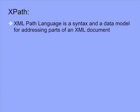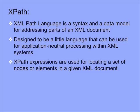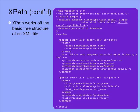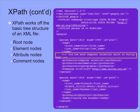XML path language, or XPath, is a syntax and data model for addressing parts of an XML document. Designed to be a little language that can be used for application-neutral processing within XML systems, XPath is a declarative language used for referring to parts of an XML document. XPath expressions are used for locating a set of nodes or elements in a given XML document. Many XML technologies, like XSLT and XQuery, use XPath extensively. The simplest form of XPath looks like a downward tree path with optional predicates. XPath is used for finding nodes that match a pattern. Each step returns a list of nodes in document order, and these nodes in turn provide context for the next step. The essential components are the root node, the element nodes, attribute nodes, and comment nodes.